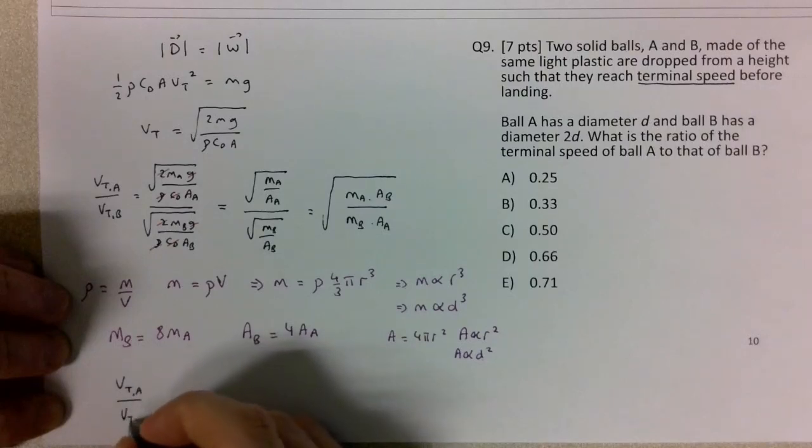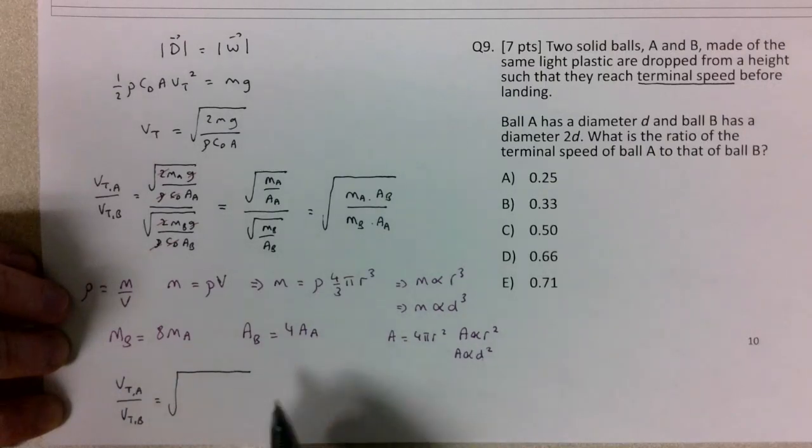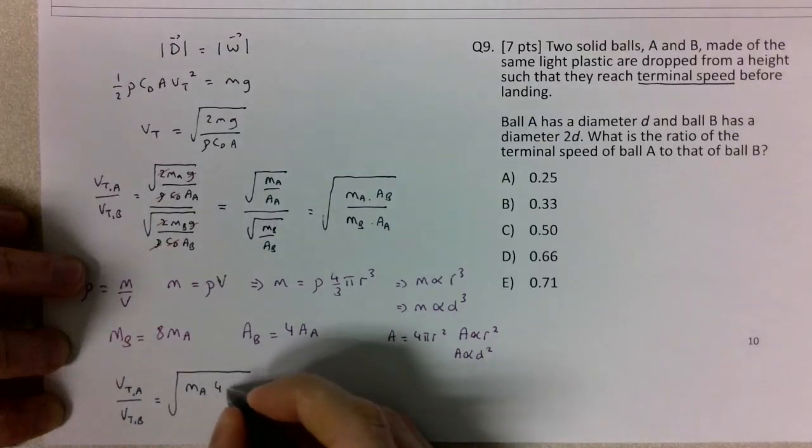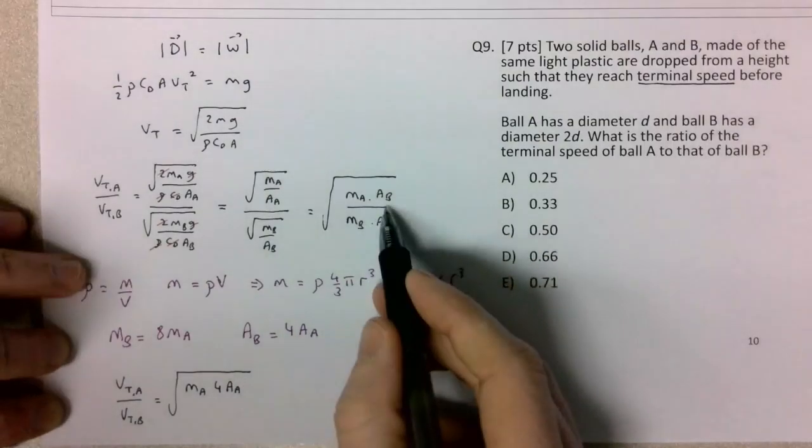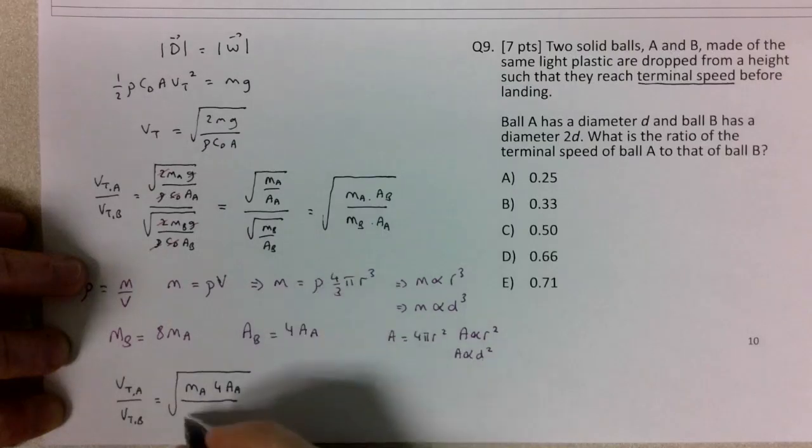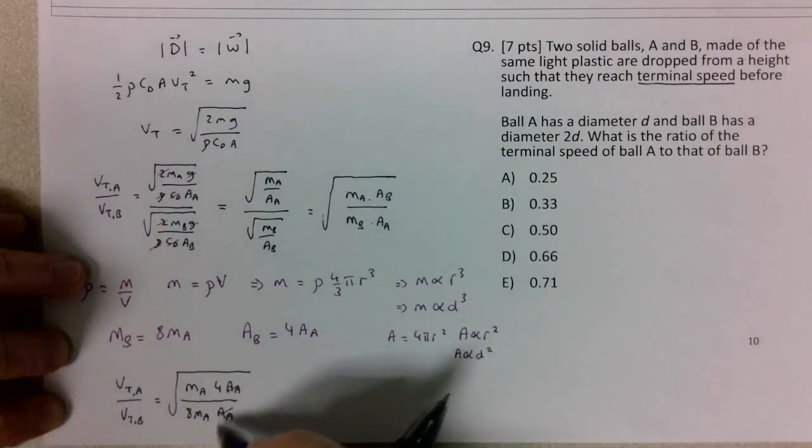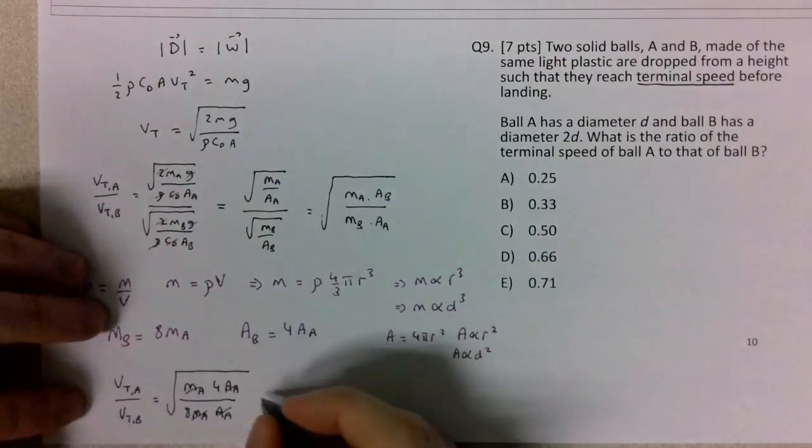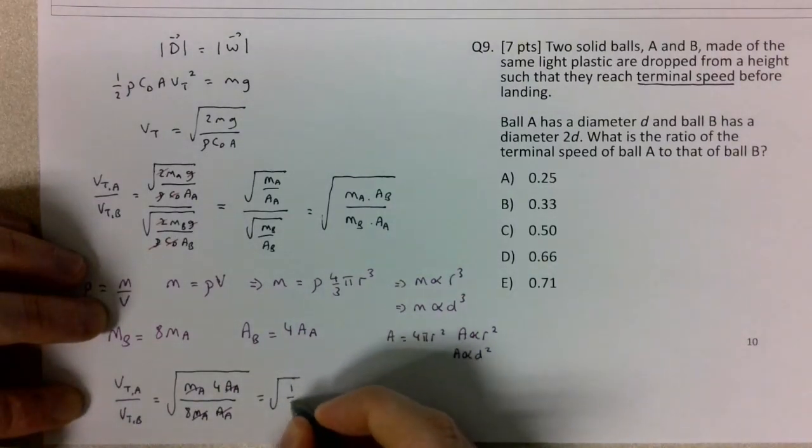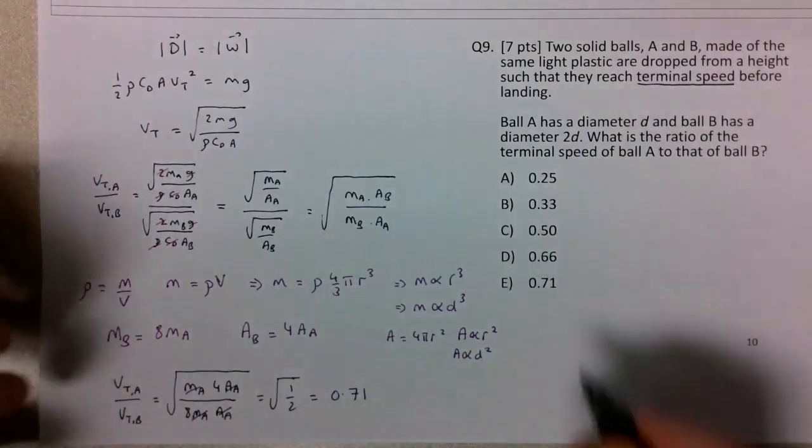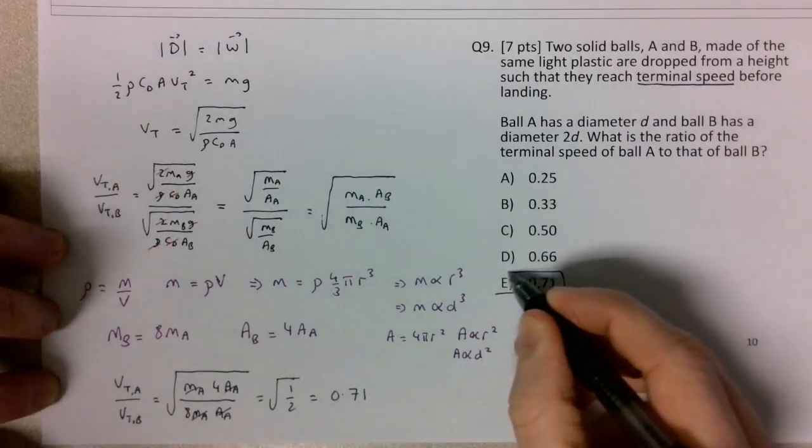vt_A/vt_B equals √(m_A/A_A) divided by √(m_B/A_B). The area of B is 4 times the area of A, and the mass of B is 8 times the mass of A. So this becomes √(m_A/A_A) divided by √(8m_A/4A_A). The areas and masses cancel, leaving √(4/8) = √(1/2) ≈ 0.71.